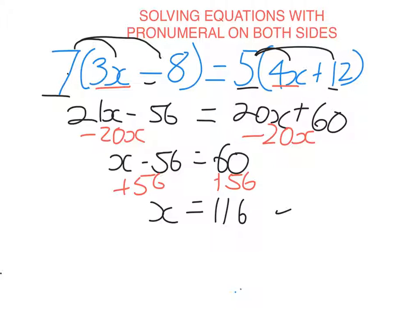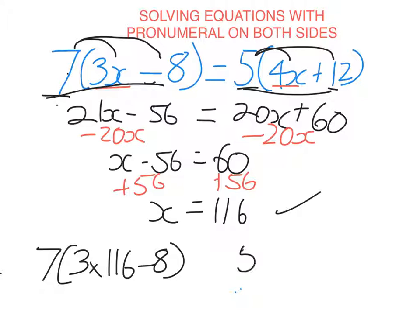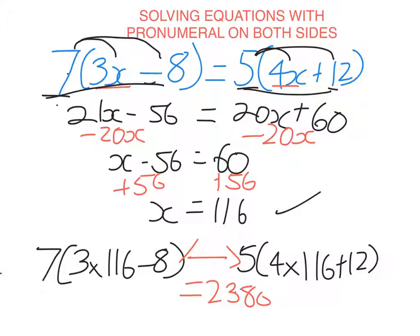Once again, this is the only solution. I can check it by substituting into this equation here. So I can put on my calculator 7 times 116 minus 8. And I can also put on my calculator 5 multiplied by 4 times 116 plus 12 and see if I get the same answer. So if I put these in my calculator, both times I get the answer 2380. So these are in fact equal, so therefore I have solved the equation. When I substitute x equals 116, this becomes a true statement.